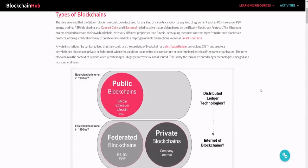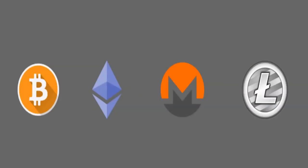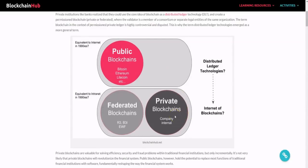In this video I'll go over public blockchains and private blockchains, what they are, and examples of top projects working in both fields. The first topic is what are types of blockchains. This graphic here gives a comparison to the internet in the 1990s — public blockchains are like what the internet was then, and private blockchains are like the intranet.